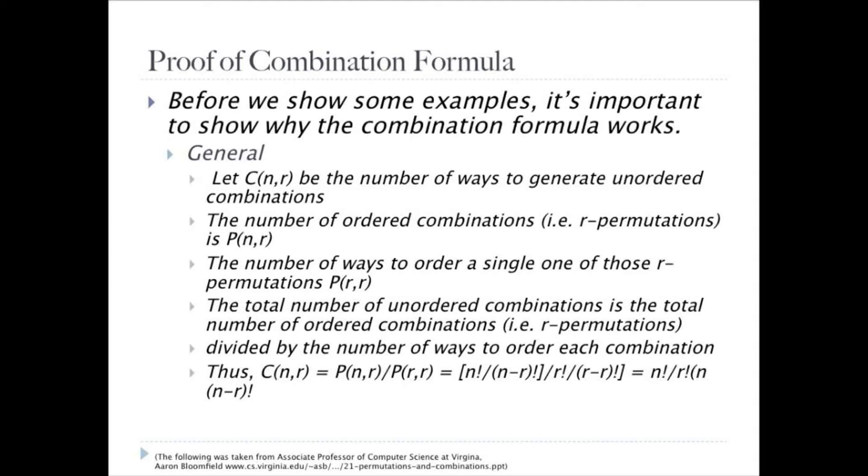So we can see that C(n,r) equals P(n,r) over P(r,r), which is also equal to n factorial over n minus r factorial all divided by r factorial, which is the same as n factorial over r factorial times n minus r factorial.